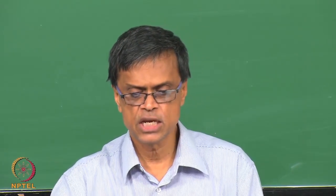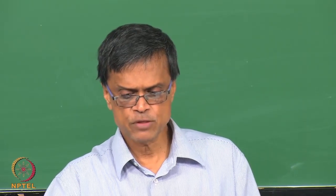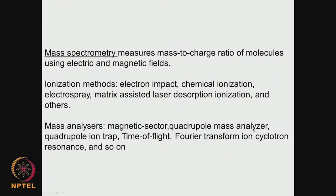The principal ionization methods are: electron impact (EI), chemical ionization (CI), electrospray (ESI), and matrix assisted laser desorption (MALDI). Once ionized, molecules can be focused using electric and magnetic fields onto an analyzer. Different types of analyzers include magnetic, quadrupole, quadrupole ion trap, time of flight, and Fourier transform ion cyclotron. Time of flight and ion trap are the most widely used.